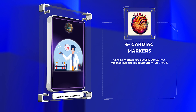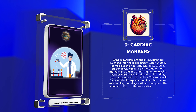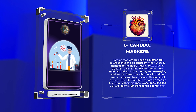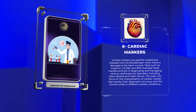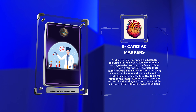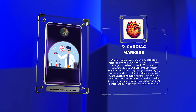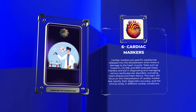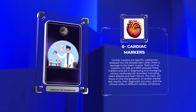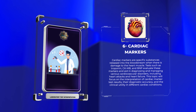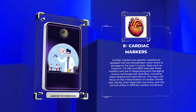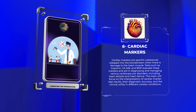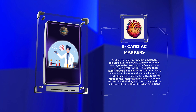Cardiac markers are specific substances released into the bloodstream when there is damage to the heart muscle. Tests such as troponin, CK-MB, and BNP evaluate these markers and aid in diagnosing and managing various cardiovascular disorders, including heart attacks and heart failure. This topic will focus on the interpretation of cardiac marker test results, their diagnostic accuracy, and the clinical utility in different cardiac conditions.